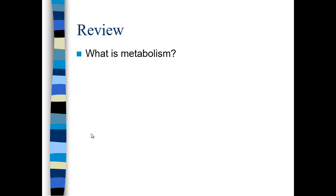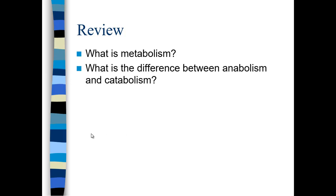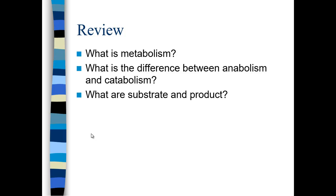Let's review. What is metabolism? Metabolism is all the different chemical reactions within the cell. The difference between anabolism and catabolism: anabolism is a term for chemical reactions that build up larger molecules, such as macromolecules involved in life. Catabolism is when these molecules are broken down — the purpose of catabolism primarily is to produce energy. The substrate is the chemical or chemicals participating in the chemical reaction, and when converted by that reaction, they become product.